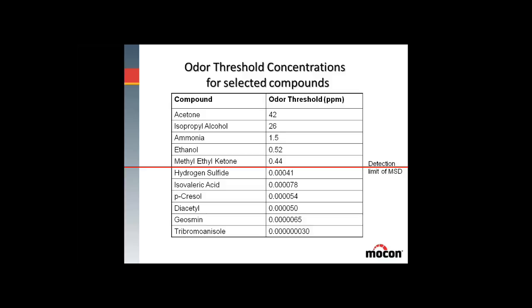Going down the table to high-impact odorants, hydrogen sulfide — the smell of rotten eggs — has a threshold of approximately 0.4 parts per billion. Isovaleric acid is a characteristic acid you'd smell from Parmesan cheese. Petresol is the typical compound you'd get from passing by a feedlot. Diacetyl is the buttery flavor in popcorn. And tribromal anisole provides a musty, moldy odor — you may have heard about it with problems in pharmaceutical products. Translating the zeros, tribromal anisole's threshold ends up being 30 parts per quadrillion. It takes a very small amount of that compound to provide an odor, and with standard analytical techniques you wouldn't be able to find it. However, using your nose to identify where that compound elutes, you can write methods to measure it quite easily.